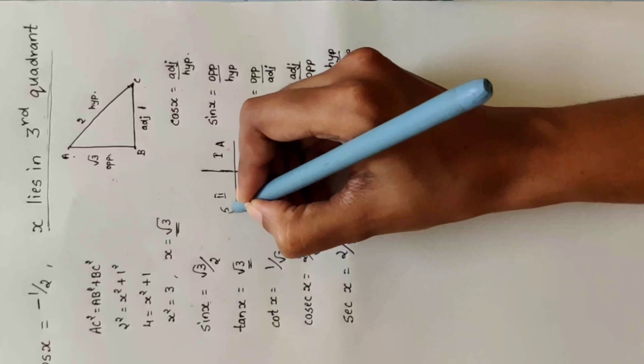Let's move to the second question. Cot x = 3 by 4, and they have given that x lies in the third quadrant. First, let's draw a triangle.